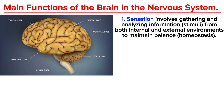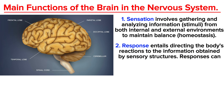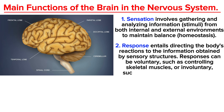The second function of the brain is response. Response entails directing the body's reaction to the information obtained by sensory structures. Responses can be voluntary, such as controlling skeletal muscles, or involuntary, such as regulating cardiac activity. That is the second main function of the brain in the nervous system.